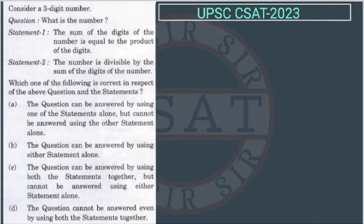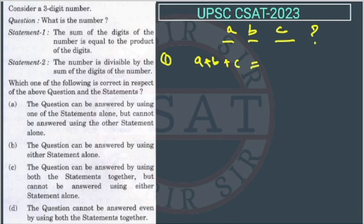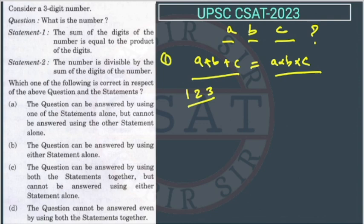In this question, consider a three-digit number — let's call it A B C. We have to find the number. The first statement says the sum of the digits equals the product of the digits, meaning A plus B plus C equals A times B times C. We know only one set of three digits satisfies this: 1, 2, 3. If you add them: 1+2+3=6, and if you multiply them: 1×2×3=6 as well.